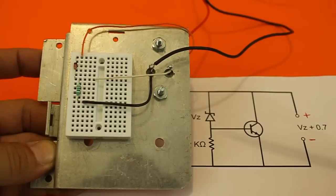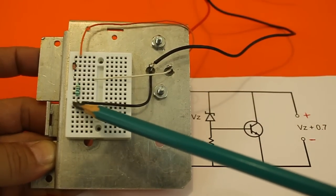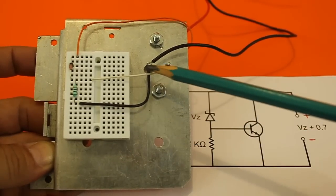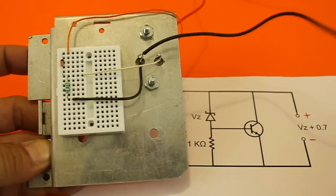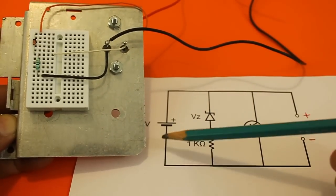Here's our circuit. We have the Zener diode and the resistor, and this is the negative of the circuit that is connected to the emitter of the transistor and from here to the negative of the load and of the power supply.